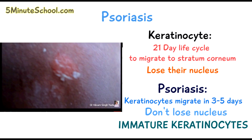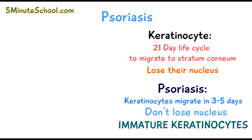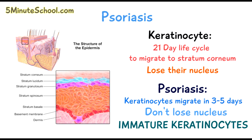So that's the fundamental concept of psoriasis. We have these keratinocytes which migrate to the surface of the skin in normal cases, but in psoriasis it happens very fast and these keratinocytes are very immature — they're not properly developed.